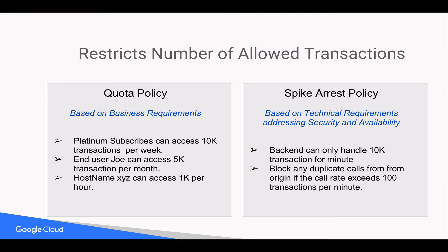To start with, for a Quota policy, the number of allowed transactions is derived based on a business-level requirement. For example, my Platinum subscribers can access 1,000 transactions per week, or I have a very special end-user, Joe, and he can access 5,000 transactions per month, or a business partner and any requests from his host names can access 1,000 transactions per day. These are all business requirements.